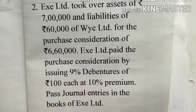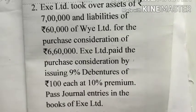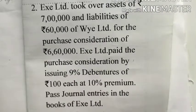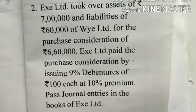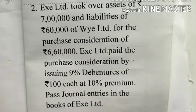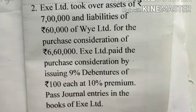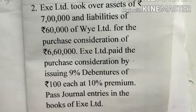Question number two: X Limited took over assets of rupees seven lakhs and liabilities of rupees sixty thousand of Y Limited for a purchase consideration of rupees six lakhs sixty thousand. X Limited paid the purchase consideration by issuing 9% debentures of rupees 100 each at 10% premium. Pass journal entries in the books of X Limited.